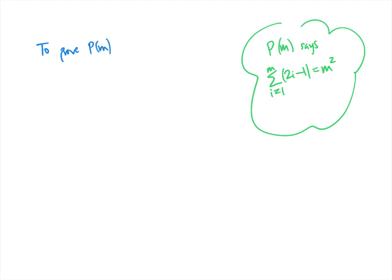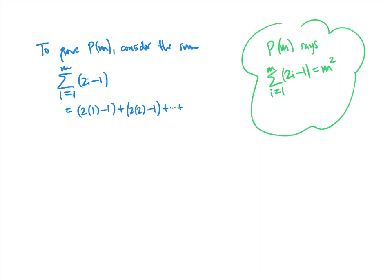To prove P of m, consider the sum as i goes from 1 to m of 2i minus 1. That expands as 2 times 1 minus 1, plus 2 times 2 minus 1, and so on. When dealing with these sums, you typically write the next-to-last term. Since the sum ends at m, the next-to-last term involves m minus 1, and the final term is 2 times m minus 1.